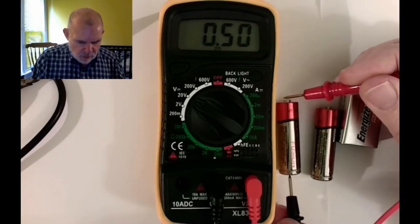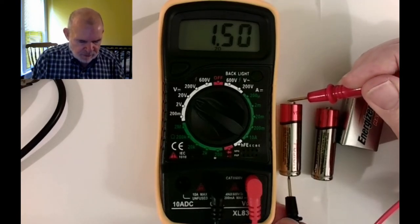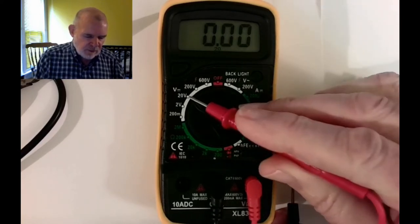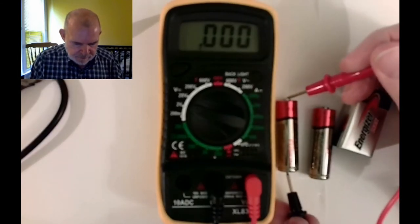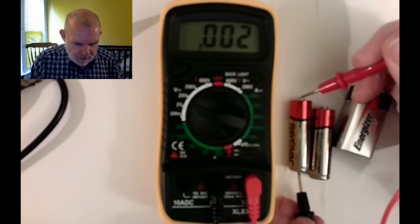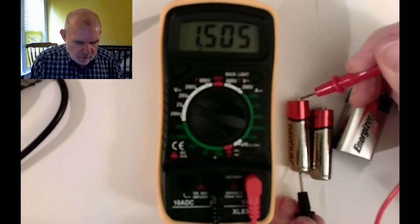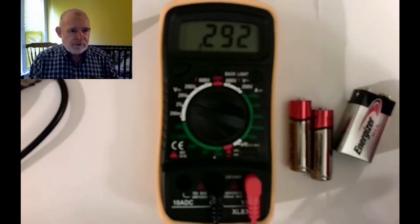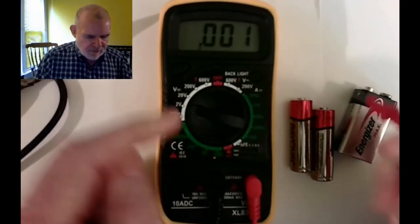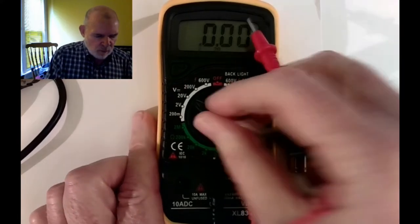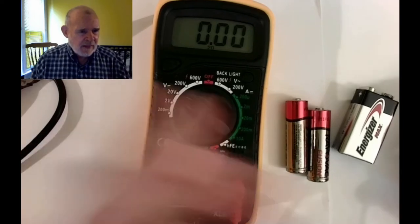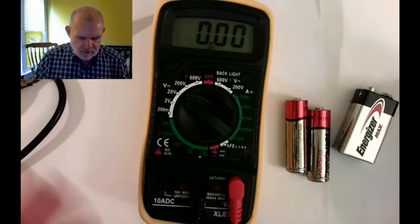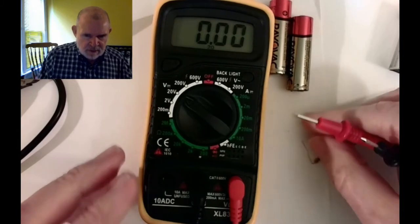But say if I wanted to know that more precisely, because now I see it's less than 20 volts, I could turn this down to the 2-volt scale. And then I could read that as really 1.505 volts. So I get a more precise reading if I use the lower scale. But for most everything we do, I don't really need it that accurately, so I just leave it on 20 volts and measure any kind of batteries that way.